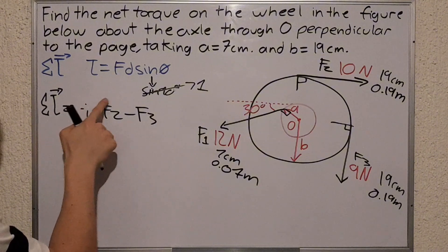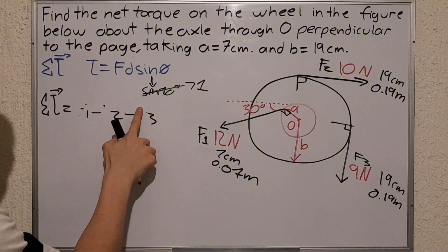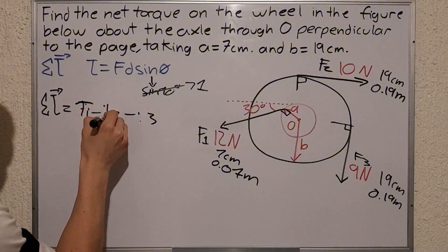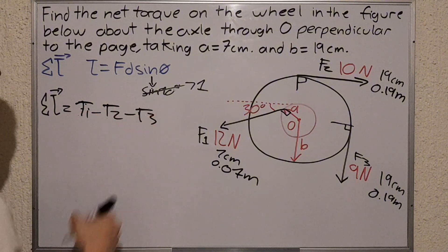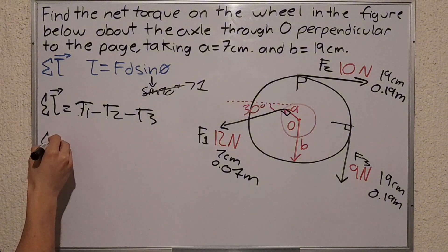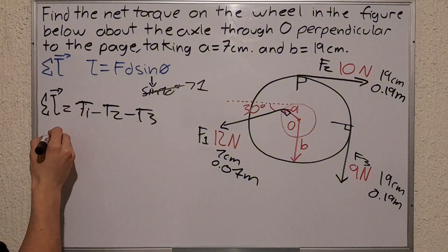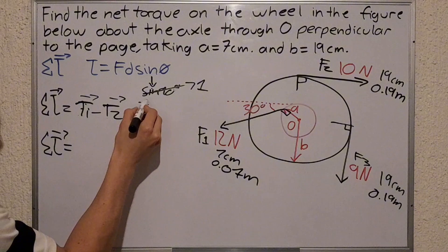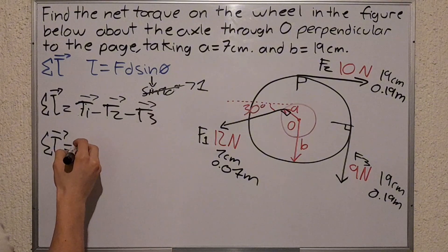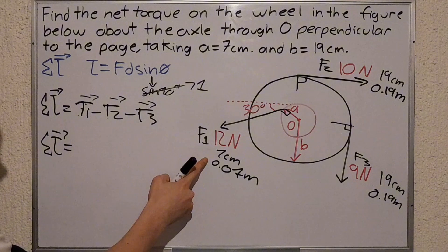Now if we get our formulas in here... oh I wrote F which is wrong, it's just T, don't worry about it, we'll get it fixed. So then we just plug in our values here, quite simple. The T1 is 12 times 0.07.